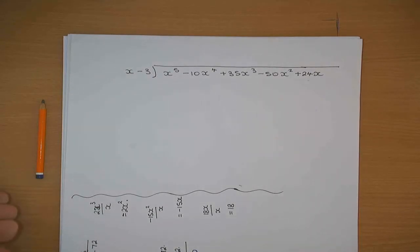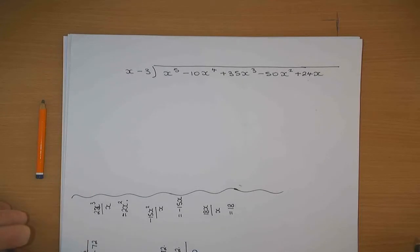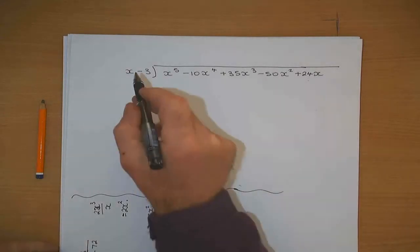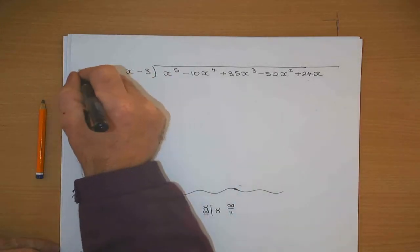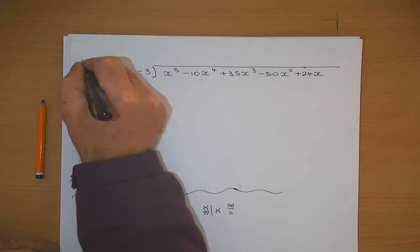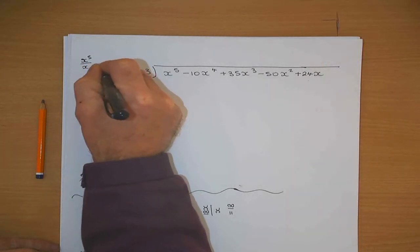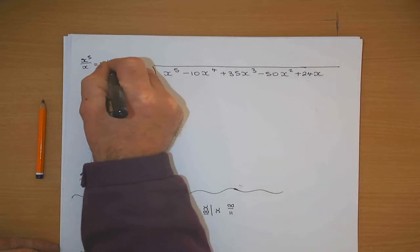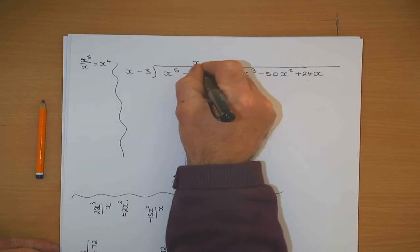You never told us how to do this one, but I'm telling you it's the exact same procedure. So how do you go about it? x into x to the 5. What's x to the 5 divided by x? x will go into that x to the power of 4.